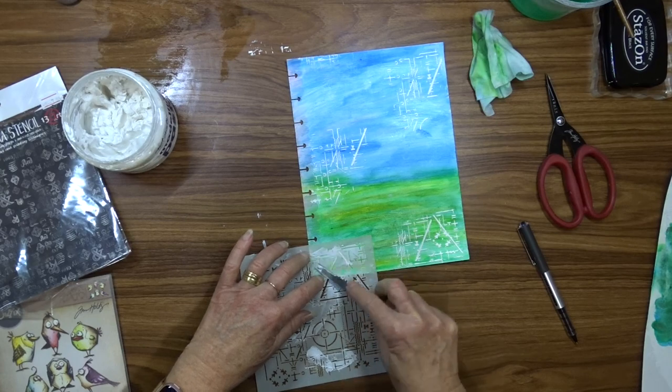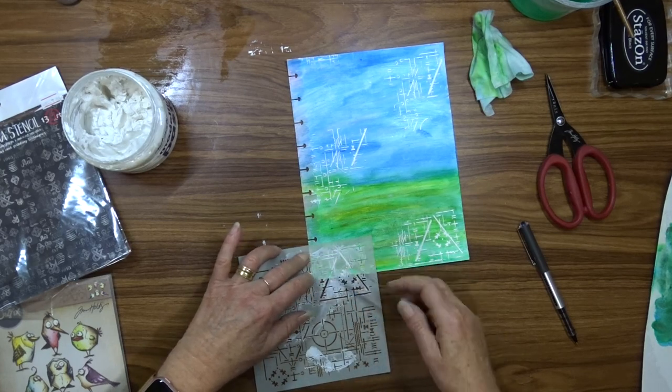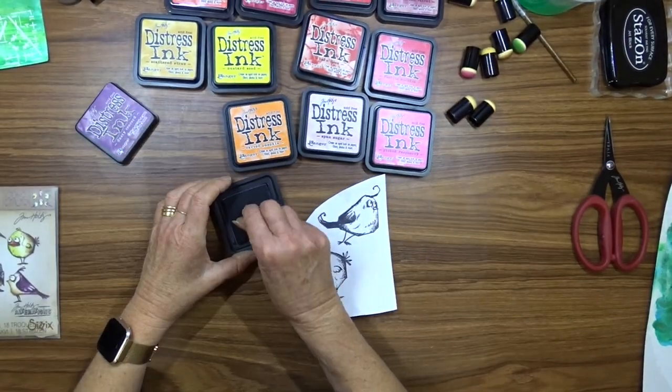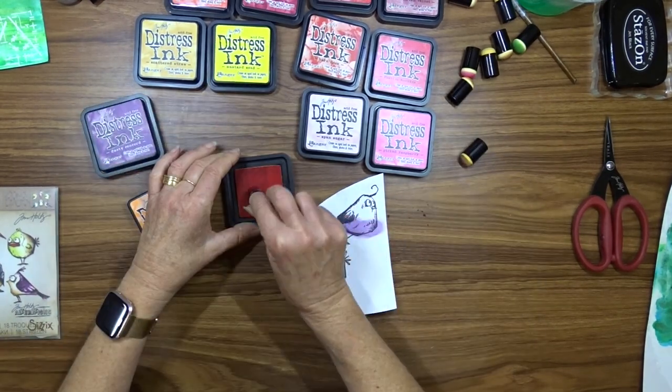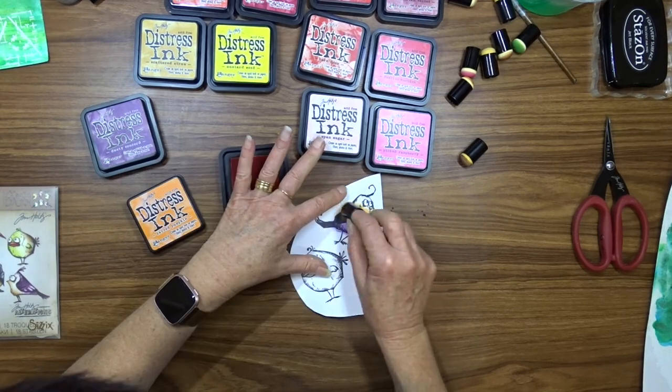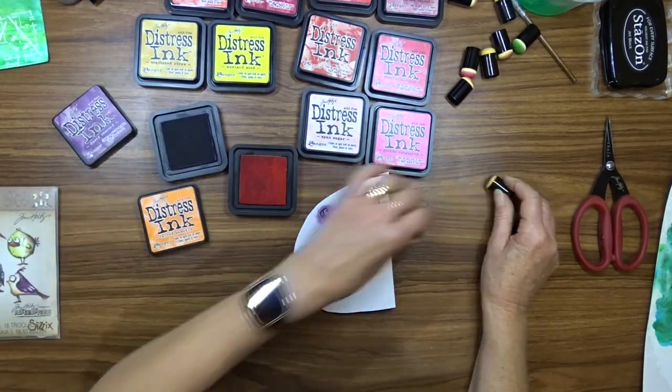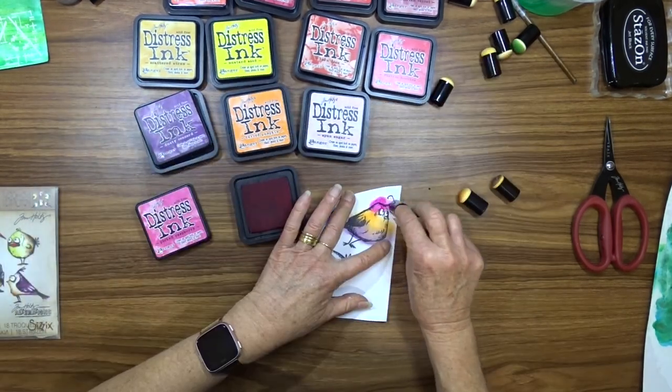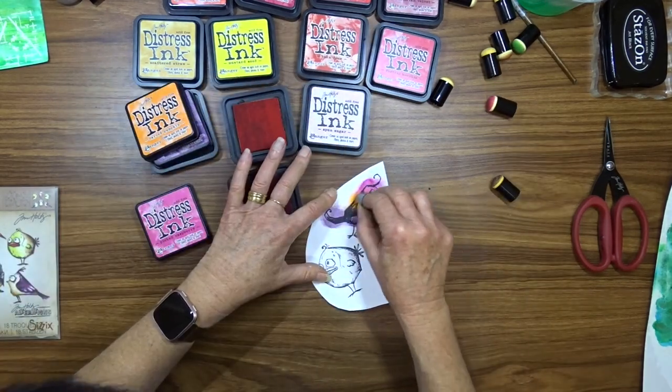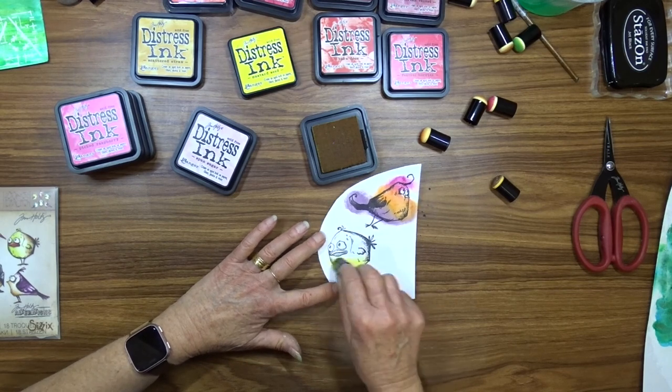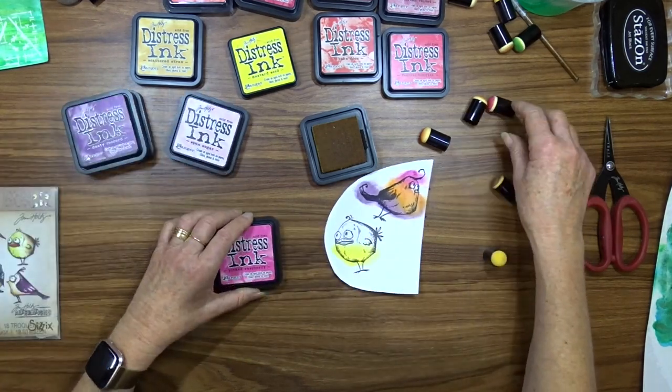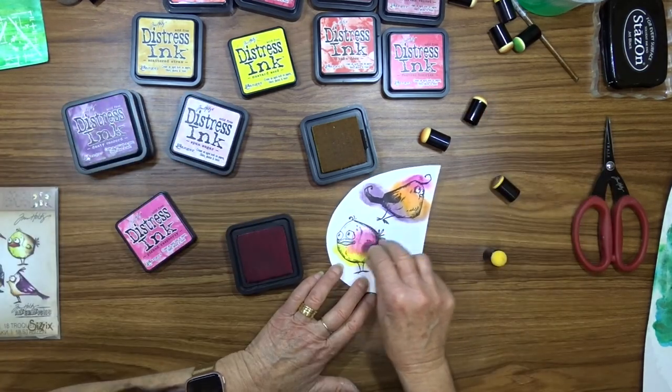Now I'll set that aside to dry and while I'm waiting for that to dry I'll start work on my birds. As I said I'm going to use Distress Inks to color my birds. The colors I end up using are Mustard Seed, Dusty Concord, Carved Pumpkin, Candied Apple and Picked Raspberry. I apply the color to the birds using a finger dabber and I blend them into each other.